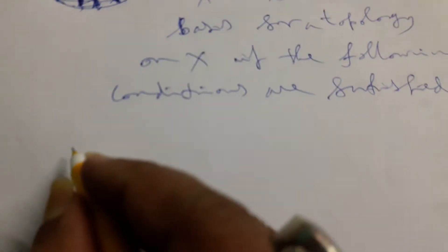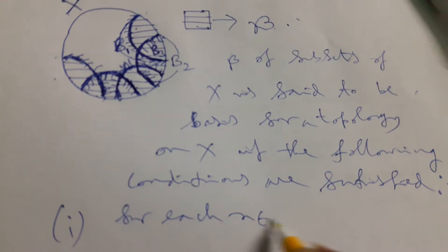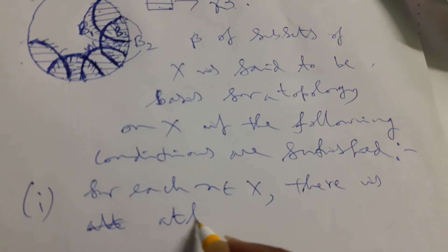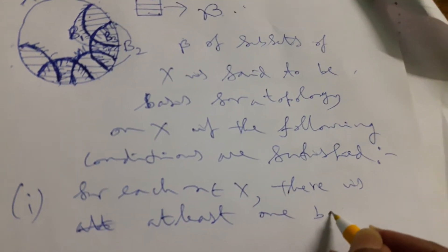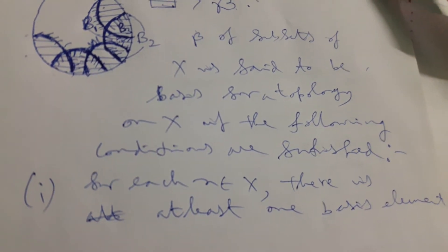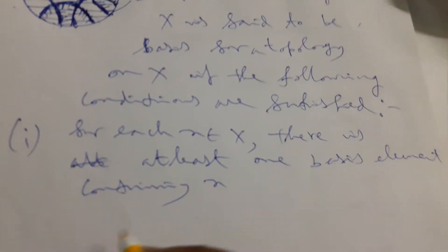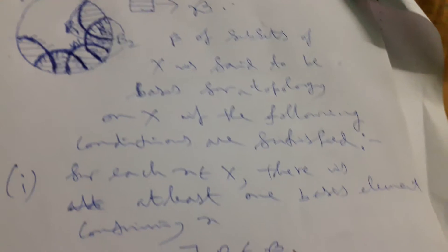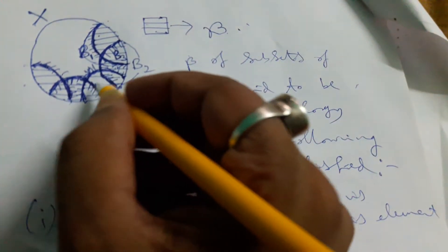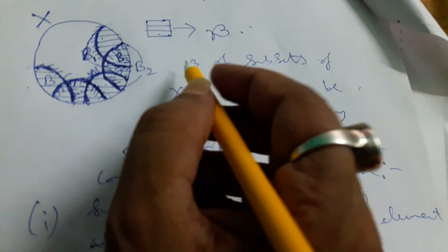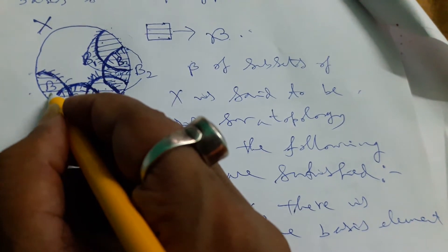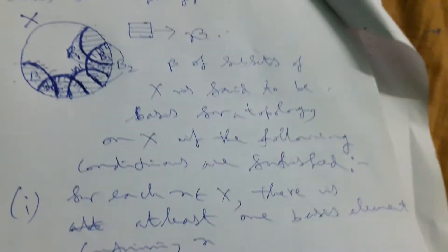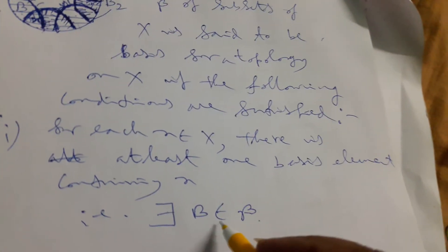Condition one: for each X belongs to capital X, there is at least one basis element containing X. That is, there exists B belongs to cursive B, such that X belongs to B, where B is the entire set capital X.